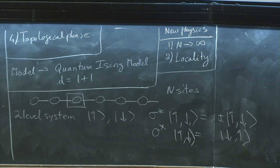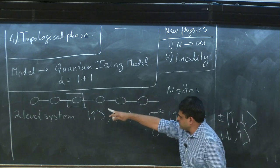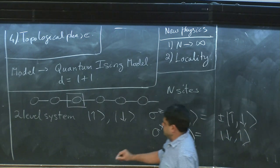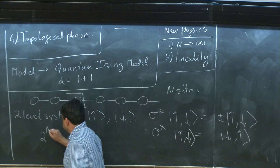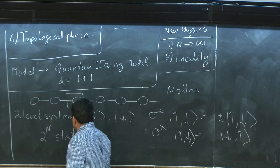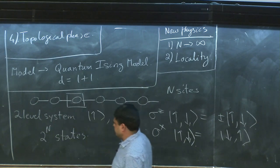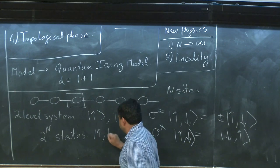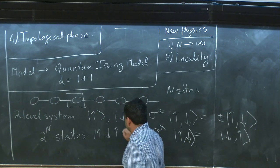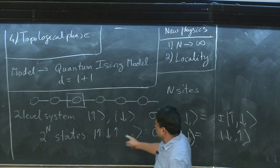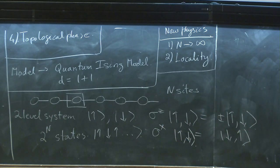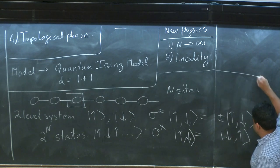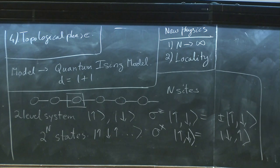That's the Hilbert space on each site. If I have many of these sites, I have 2^N basis states for my Hilbert space, which are just products of what each of these spins are doing on the N sites. So that's the space of my system. Now I want to think about some Hamiltonian that's going to give me some interesting physics, and we want to introduce some symmetry.